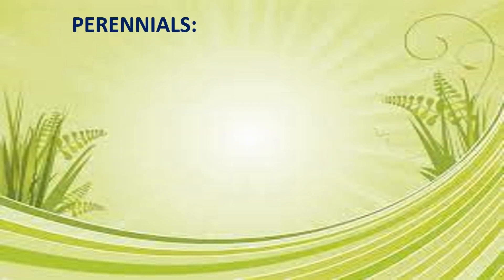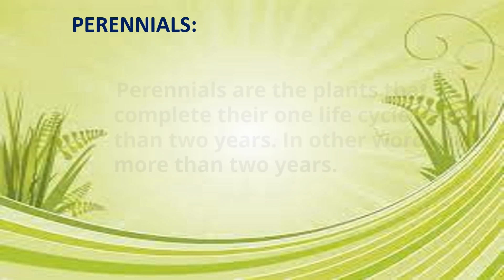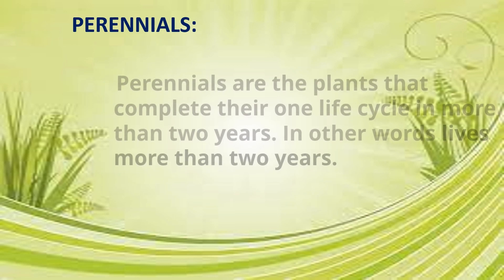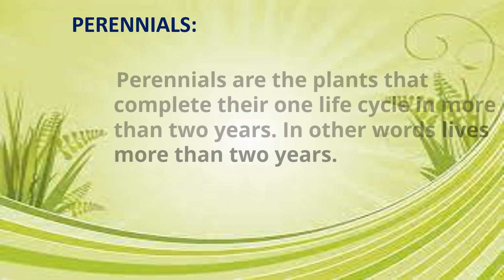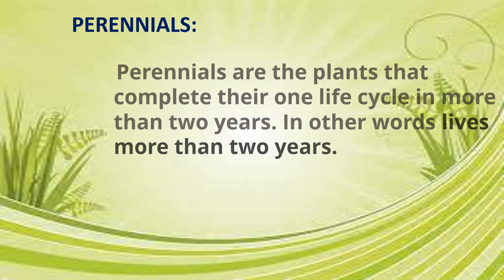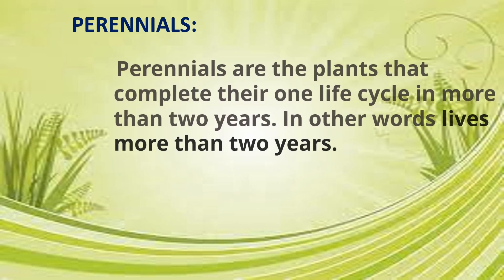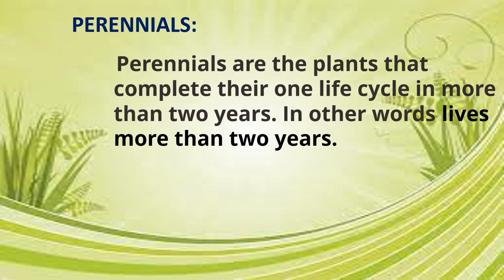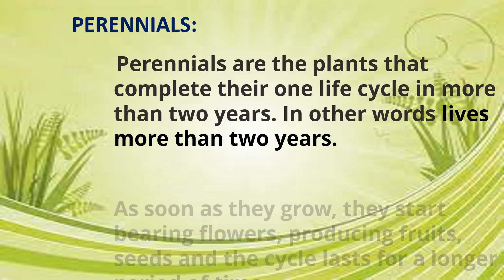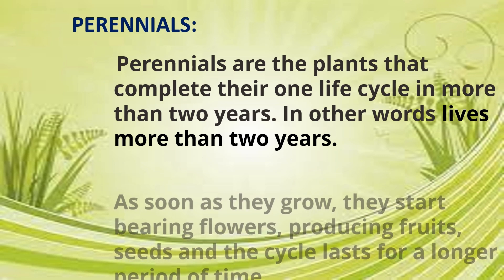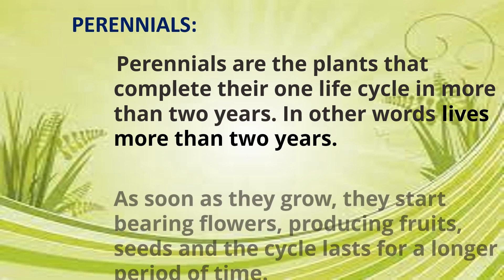Perennials: perennials are the plants that complete their one life cycle in more than two years. As soon as they grow, they start bearing flowers, producing fruits, seeds, and plants, and the cycle lasts for a longer period of time.